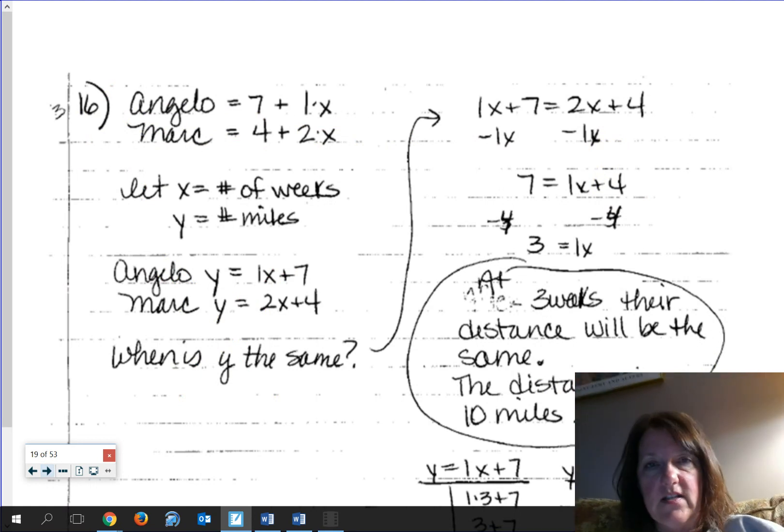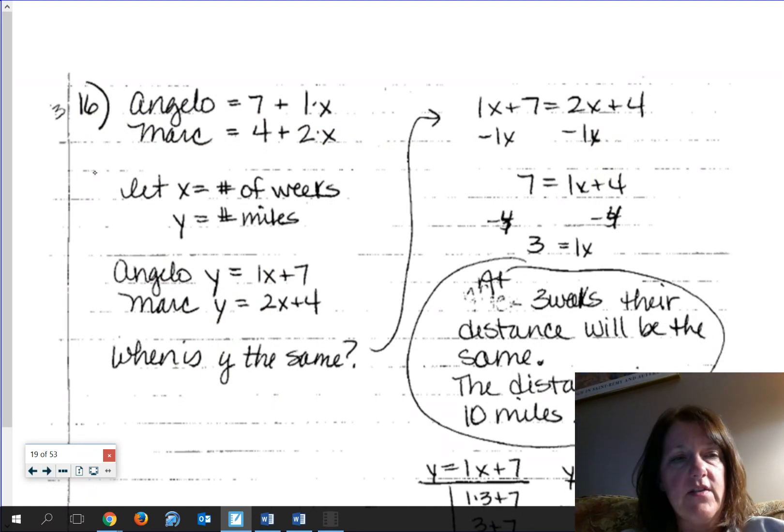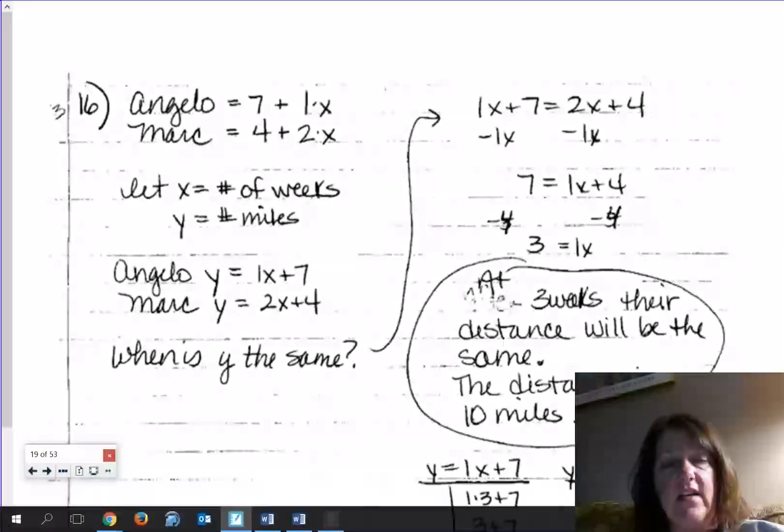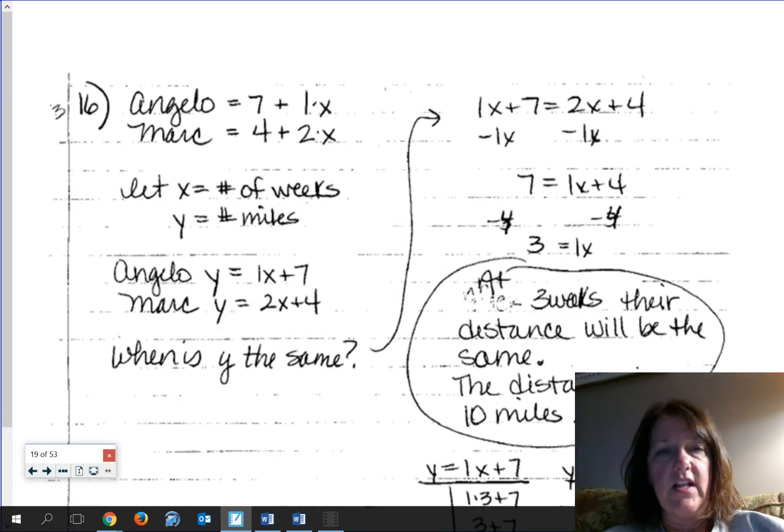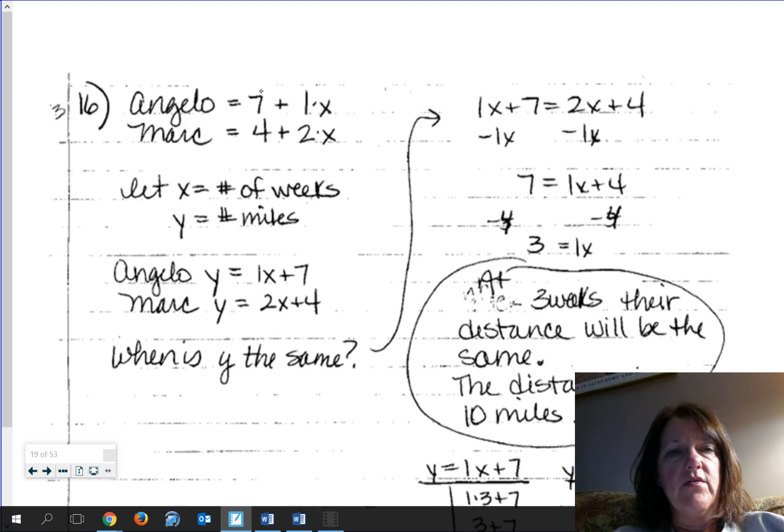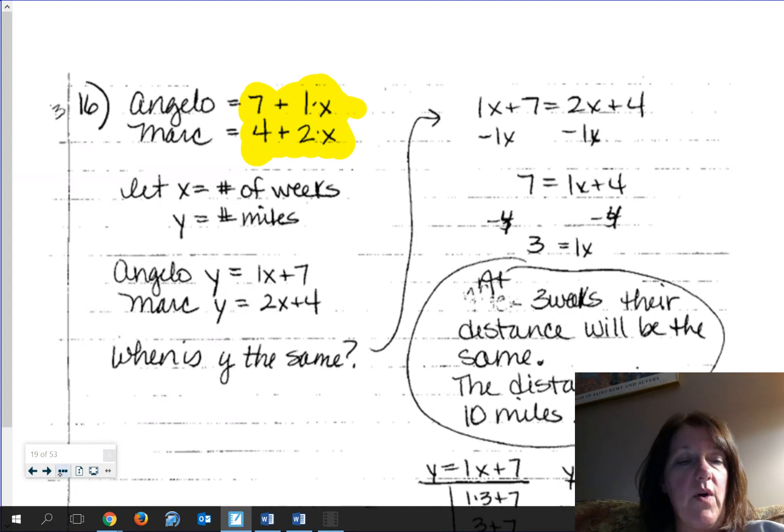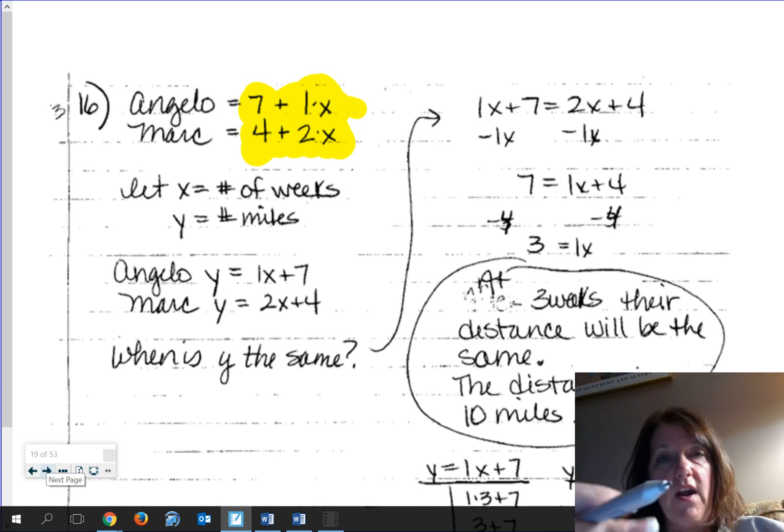Now you get into 16. This is a word problem. So for 16, you've got to do some setting up and understanding of what's going on here. I'm trying to remember if this is like these guys are training and running or something like that. So Angelo's situation is he's already running seven miles. He's going to increase it by a mile a week. Mark, four miles, two miles a week. And so your job is trying to figure out when will these guys be the same.